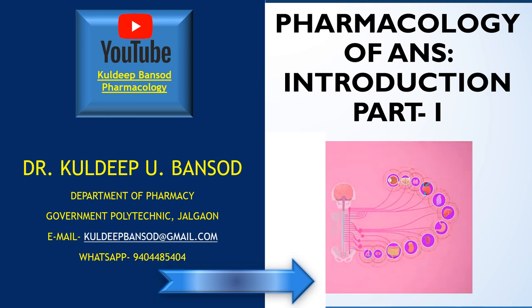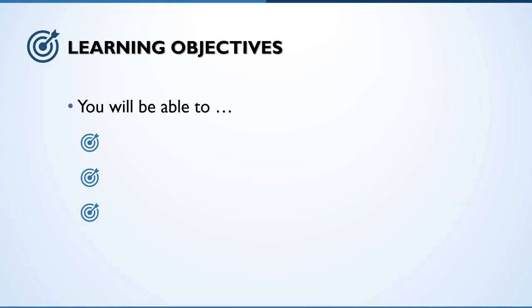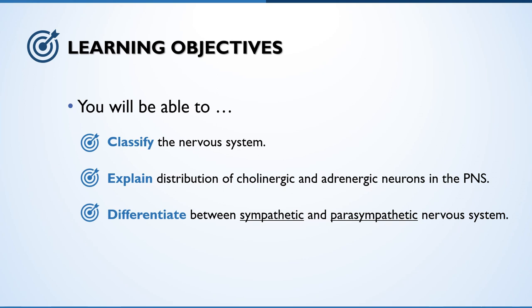I have divided this introduction in two parts. Let's see first the learning objectives of this part. After going through this learning dialogue, you will be able to: classify the nervous system; explain the distribution of cholinergic and adrenergic neurons in the peripheral nervous system; and differentiate between sympathetic and parasympathetic nervous system.